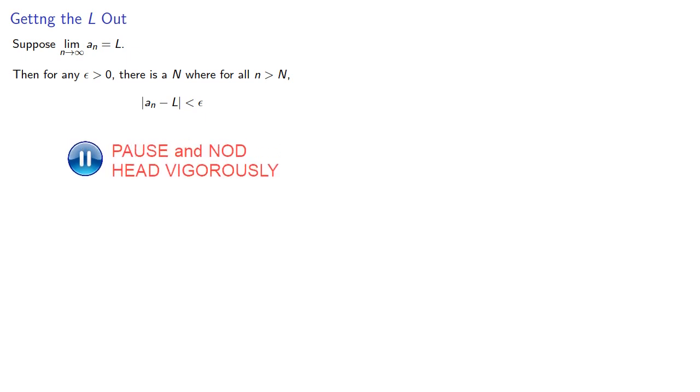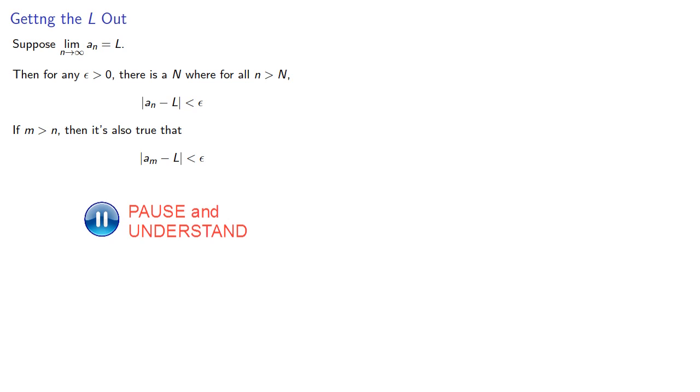So suppose our sequence has limit L. Then, by the definition for any epsilon greater than 0, there is an N where for all n greater than N, the absolute value of a_n minus L is strictly less than epsilon. Now if we take m even larger, then it's also true that a_m minus L will be less than epsilon, so the sum will be less than 2 epsilon.